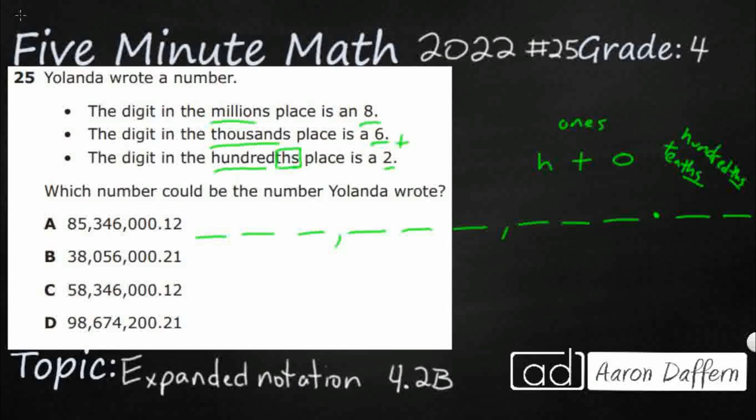But then the pattern repeats right here. I've got my thousands family or thousands period, and it's going to be that same pattern: one thousand, ten thousand, hundred thousand. This is my millions family or millions period: one million, ten million, hundred million. The pattern just goes on and on.